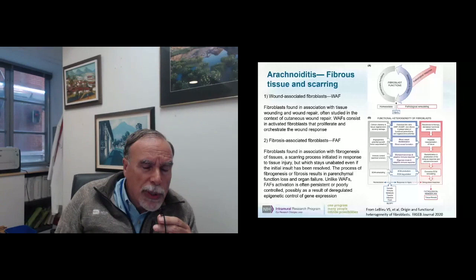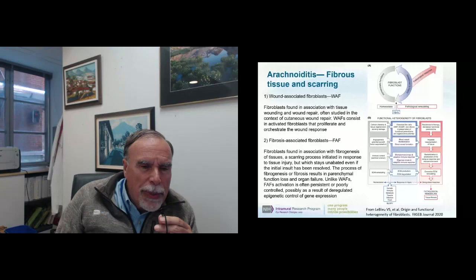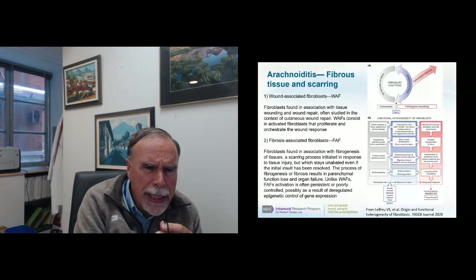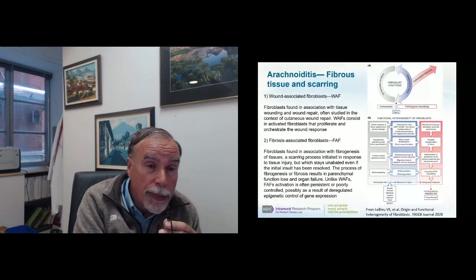This proliferation without bounds is almost like a cancer-type process — it isn't cancer, it won't spread to other areas of the body, but growth factors cause the fibroblasts to grow out of control. We don't really know why fibrosis-associated fibroblasts are activated in patients with arachnoiditis. It could be genetic, related to the amount of bleeding in the subarachnoid space, or multi-factorial.